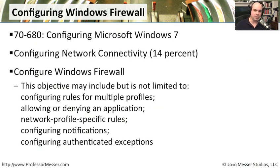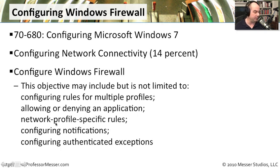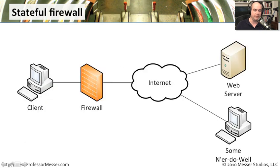Windows Firewall is pretty extensive. We need to be able to configure rules for multiple profiles, allowing or denying an application to be used in our Windows 7 operating system, network profile specific rules, configuring notifications, and configuring authenticated exceptions in the Windows 7 Windows Firewall.